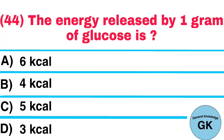Question number 44. The energy released by 1 gram of glucose: A. Six kilocalories, B. Four kilocalories, C. Five kilocalories, D. Three kilocalories. Answer: Four kilocalories.